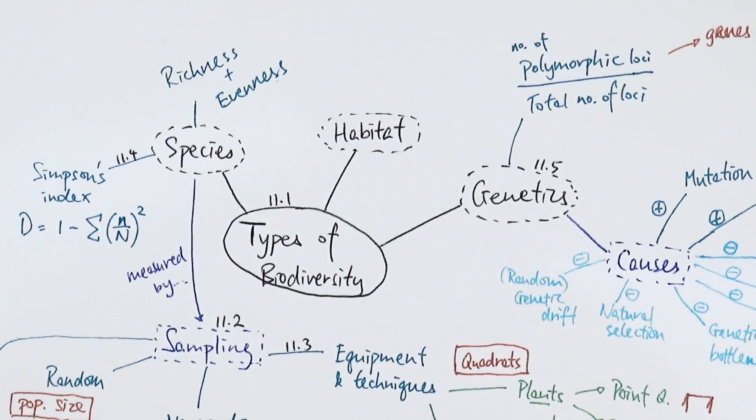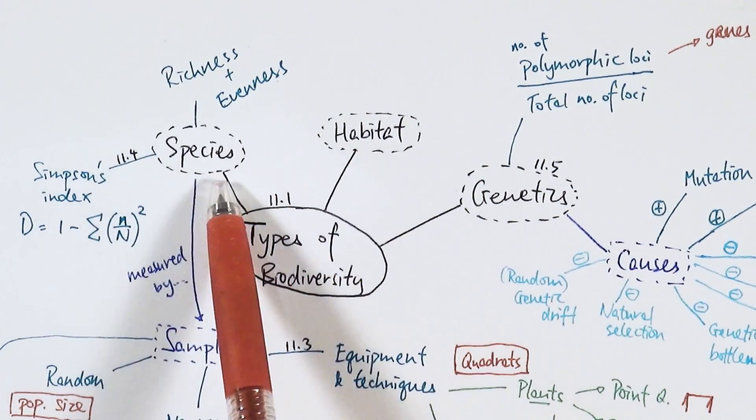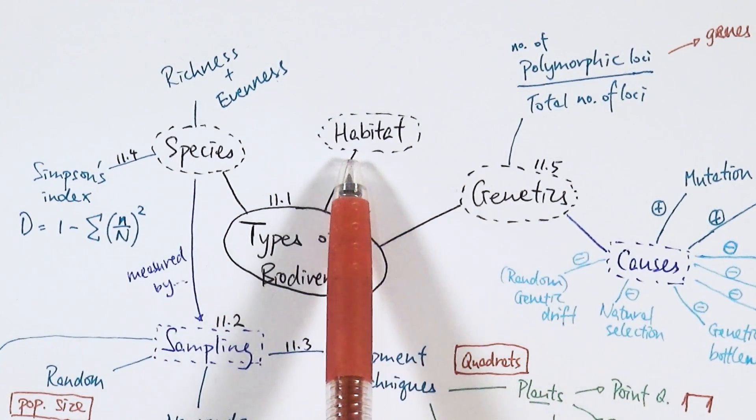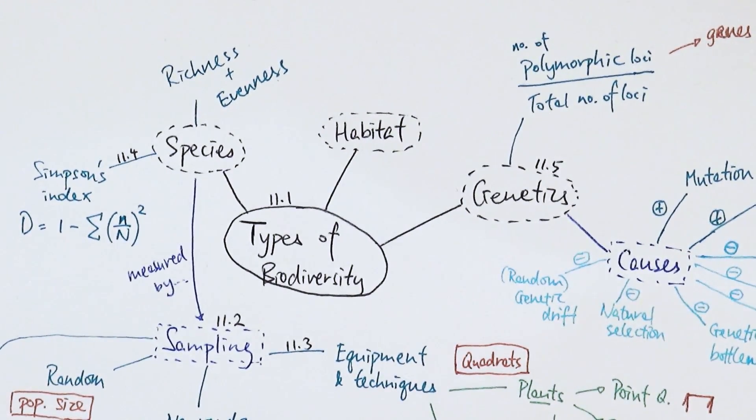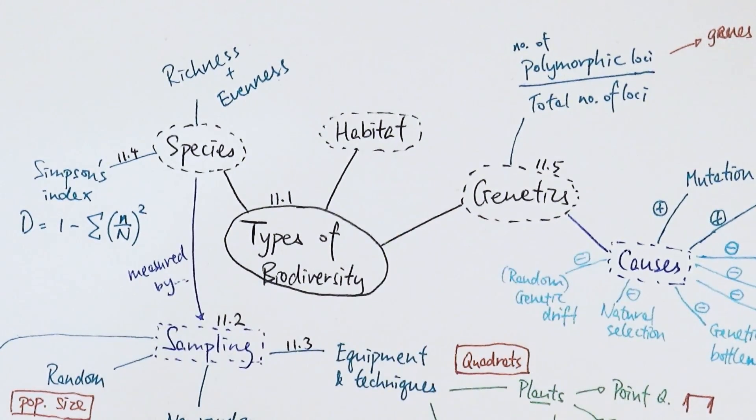Now let's look at the different types of biodiversity. There are three main types: species, habitat, and genetics. Habitat is straightforward—it means the different types of habitat you can have in a particular area. In a school setting you might have woodlands, a pond, or walls with ivy growing, presenting different habitats.